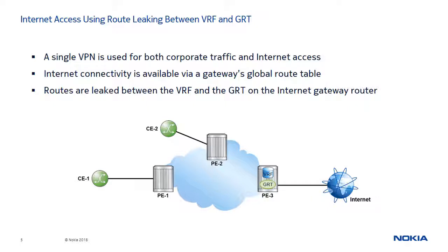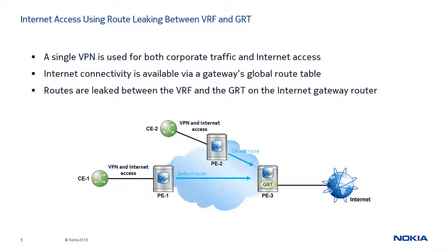In this example, PE3 is the Internet gateway router that provides Internet connectivity via its base routing table. The VRFs on PE1 and PE2 need to provide Internet access to CE1 and CE2 in addition to providing VPN connectivity. There is no requirement for the VRFs to contain the full Internet route table, so a default route to the Internet gateway router — PE3 in this case — is sufficient. Routes are then leaked between the VRF and GRT to enable Internet access.